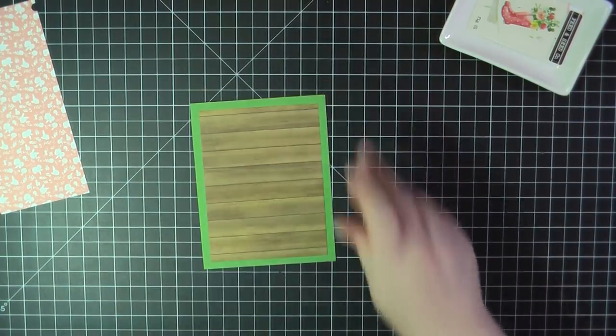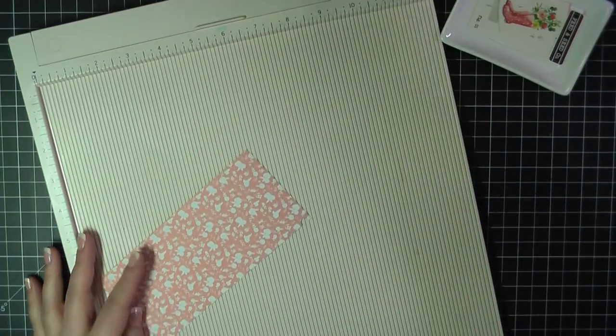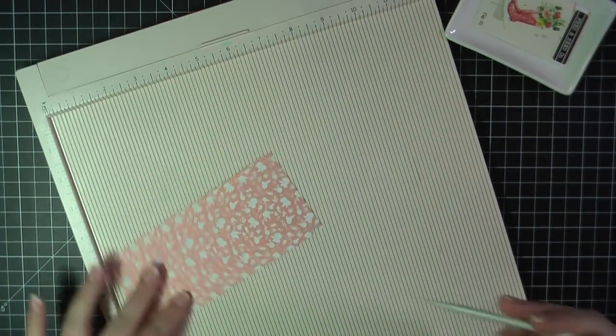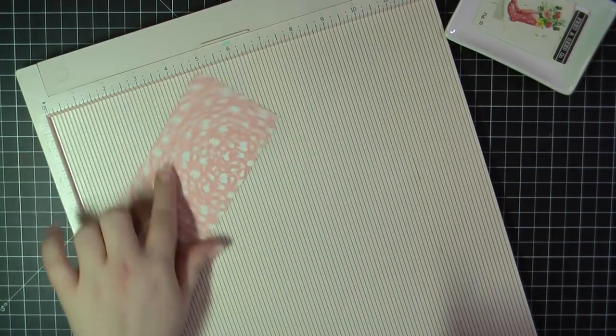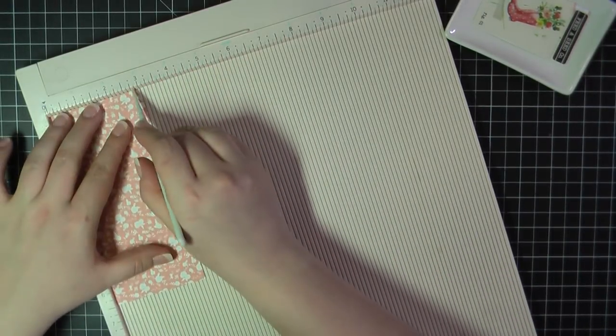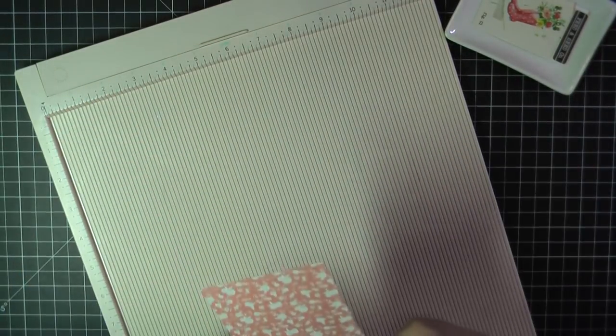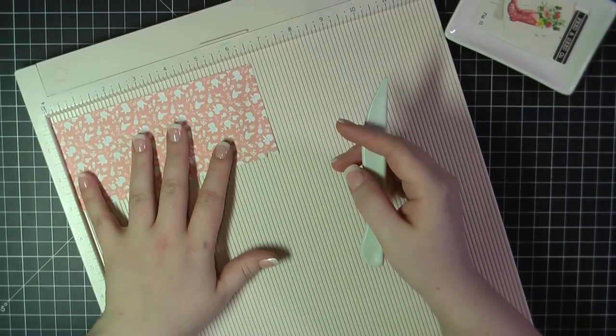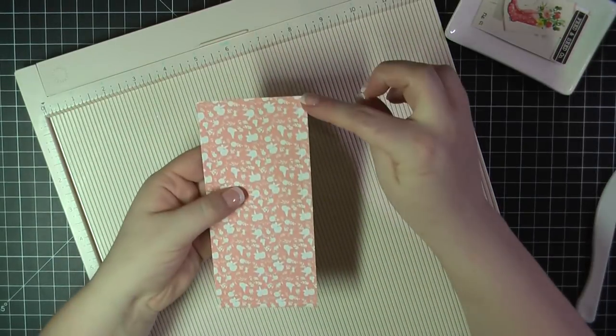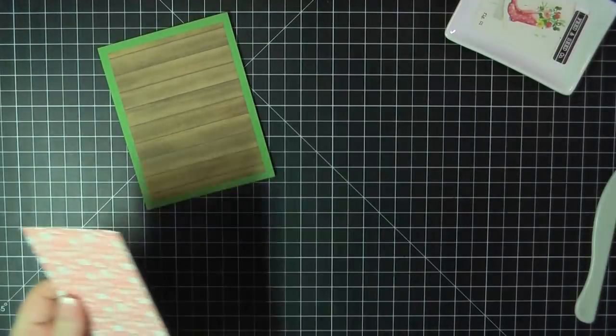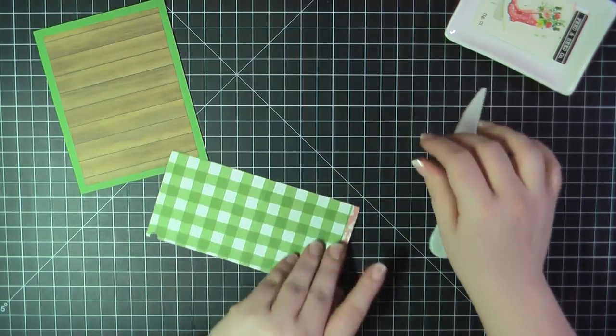Then off to the side there you'll see I've trimmed this pink and white floral paper in half. So this measures the full six and a half by three inches and I'm going to score that in the middle at three and a quarter. Then I'm taking this and I'm going to score at a quarter of an inch on either end, and then along one of the shorter ends I'll do another quarter of an inch.